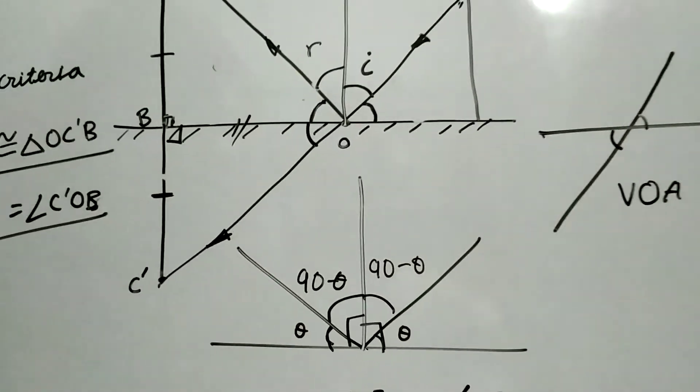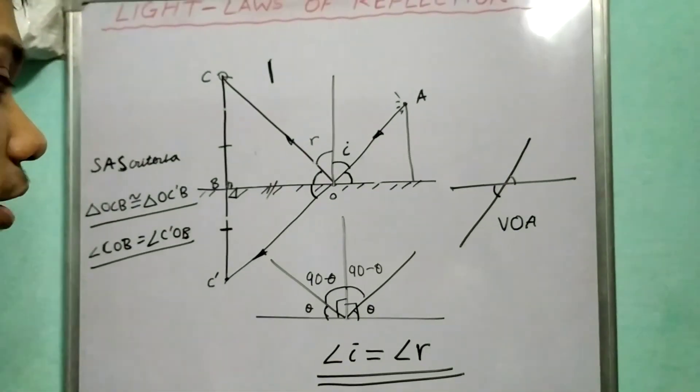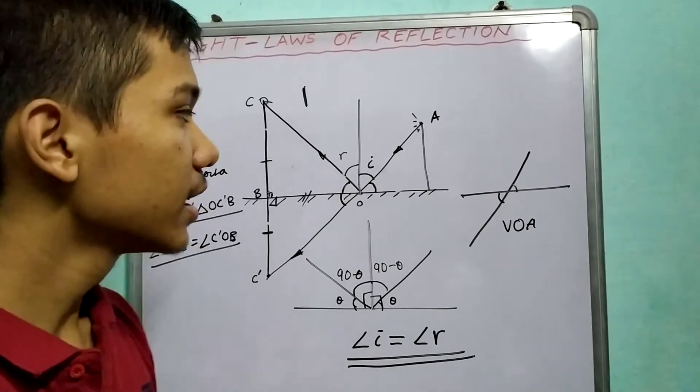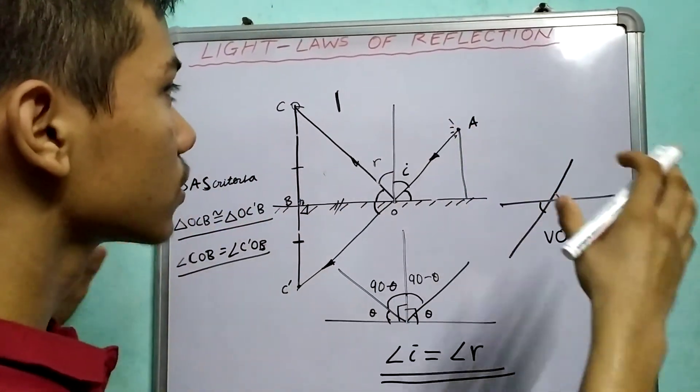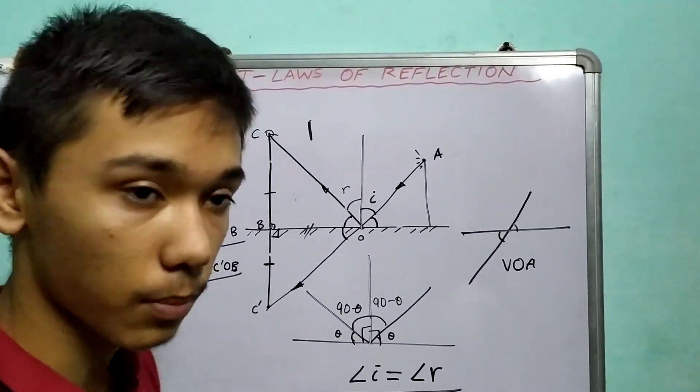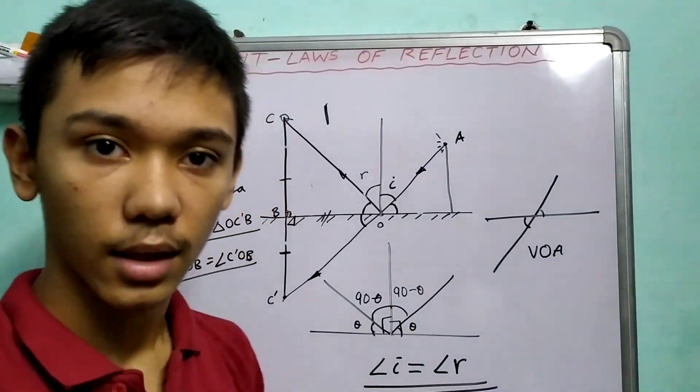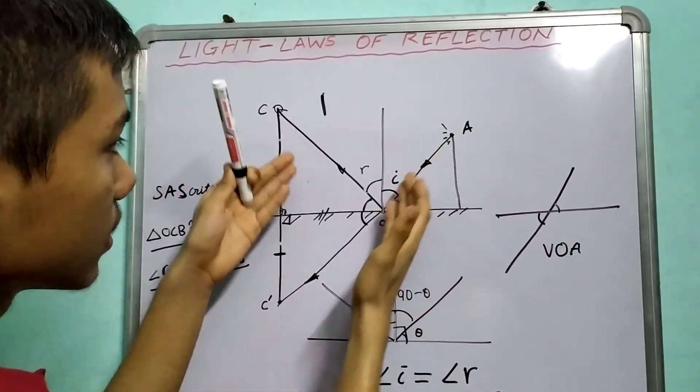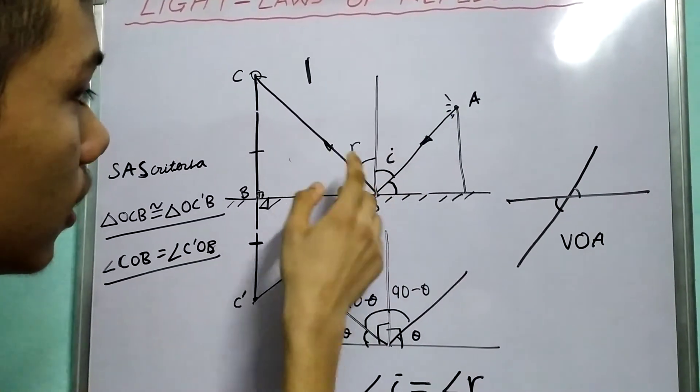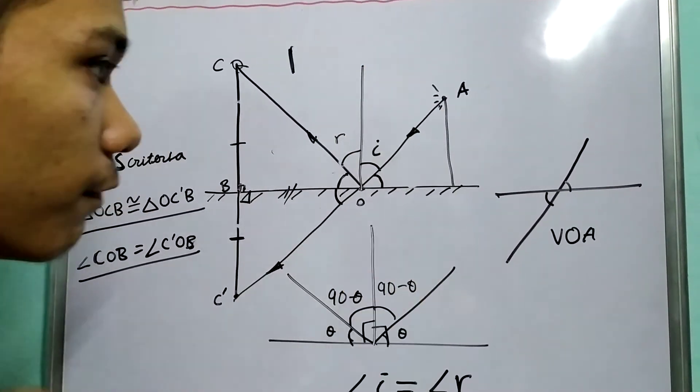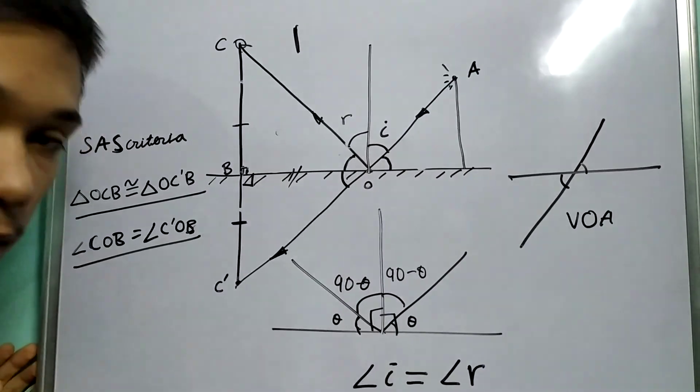Now, what about the second law of reflection that they lie on the same plane? See, in this, we have assumed that the medium is homogeneous and isotropic. So, light will not change its path. Therefore, these three, incident ray, reflected ray, normal, will lie on the same plane. This is the plane of the board, in this case.